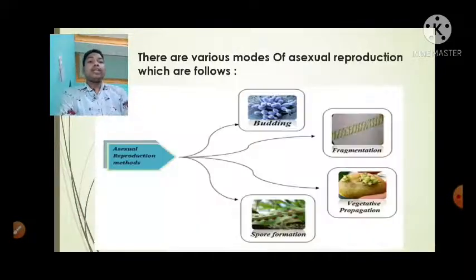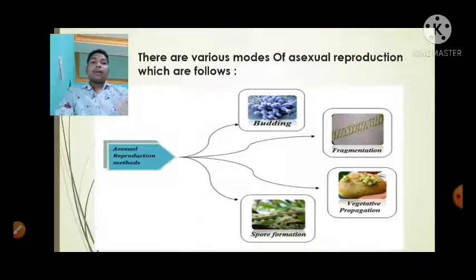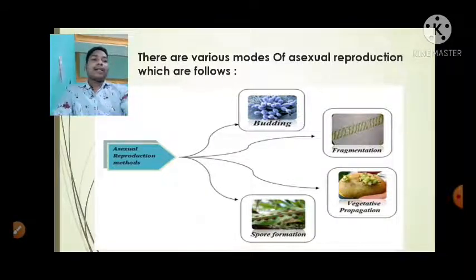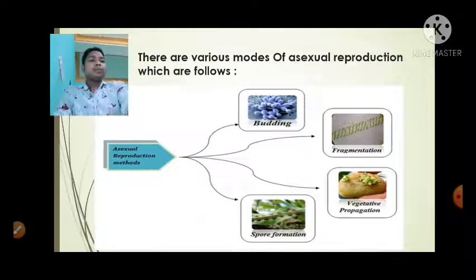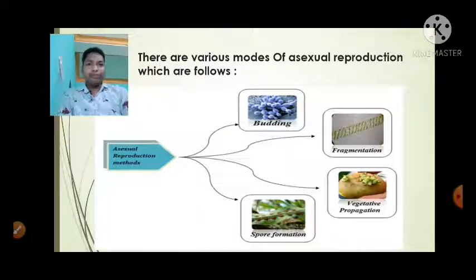There are various modes of asexual reproduction. That is budding, fragmentation, vegetative propagation, and spore formation. Now we will discuss different modes of reproduction one by one.